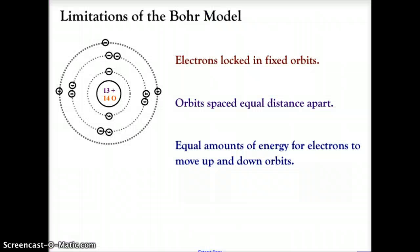There are some limitations to the Bohr atom and as I told you in the previous video, the Bohr atom is an oversimplification of the arrangement of electrons around the nucleus of the atom. Part of the problems with the Bohr model is it tells us that the electrons are locked in fixed orbits and that's not necessarily the case.